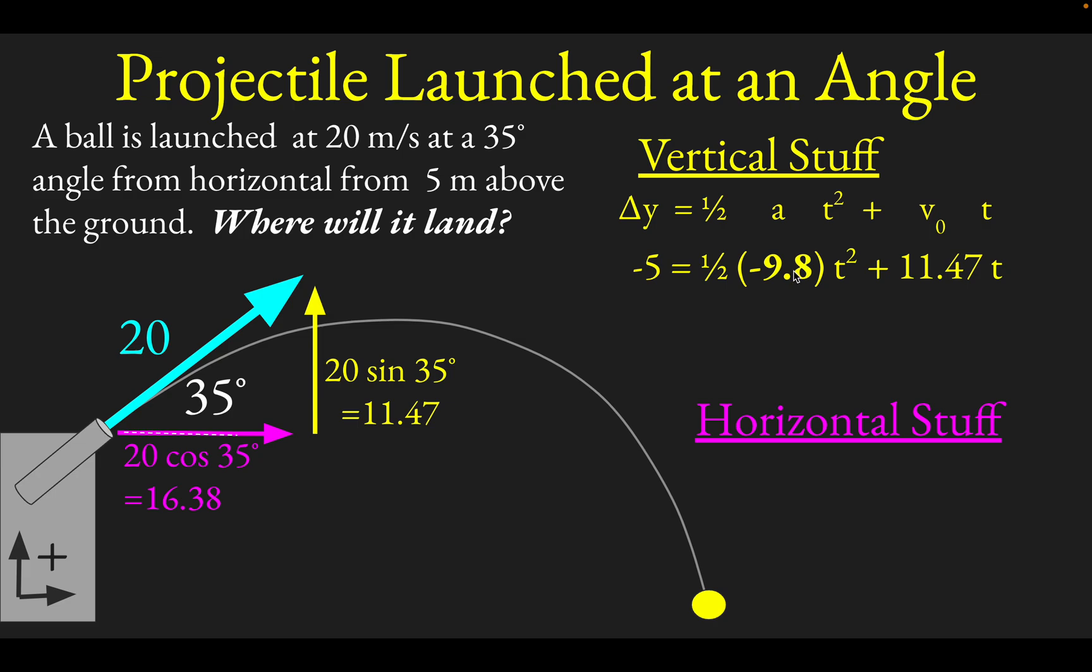My acceleration is also downward, so it is negative. That is the reason that the negative sign is there. If I had chosen positive down, then I would put positive 9.8 in here, but I didn't—I chose positive up, so the acceleration is negative 9.8. My initial y velocity is 20 sin 35, or 11.47, and it is positive because it points up.